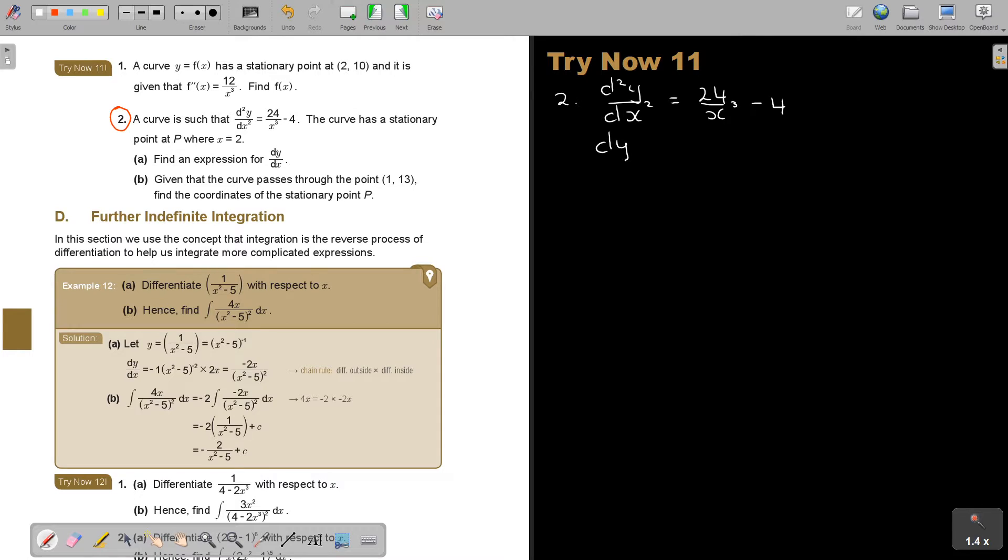The first step is going to be to find dy over dx by integrating. It's 24x to the power of negative 3 minus 4, and I'm integrating 2x dx. That is going to give me dy over dx equals 24x negative 2 divided by negative 2, minus 4x. Let's call it also c1.